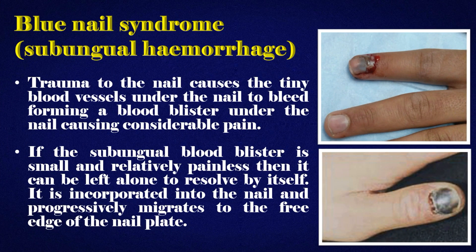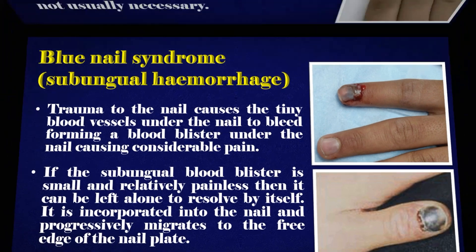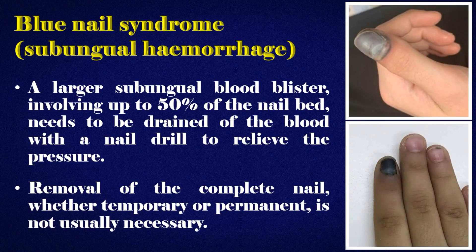Blue nail syndrome — subungual hemorrhage: trauma to the nail causes tiny blood vessels under the nail to bleed, forming a blood blister causing considerable pain. If the subungual blood blister is small and relatively painless, it can be left alone to resolve by itself; it is incorporated into the nail and progressively migrates to the free edge. A larger subungual blood blister involving up to 50% of the nail bed needs to be drained with a nail drill to relieve pressure. Removal of the complete nail, temporary or permanent, is not usually necessary.